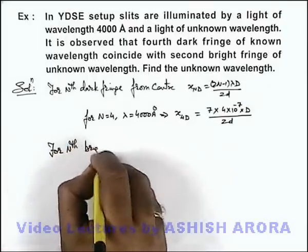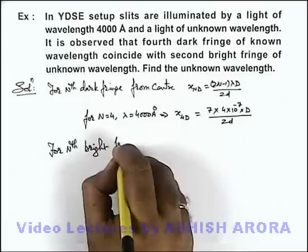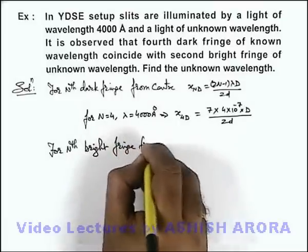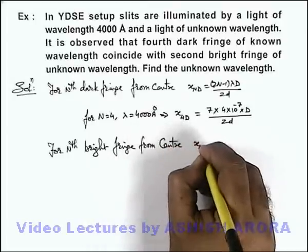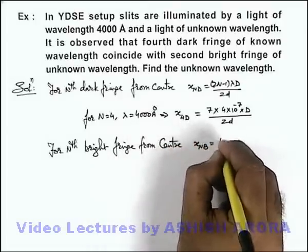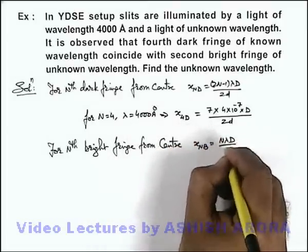nth bright fringe from center, we can use x_nb = nλD/d.